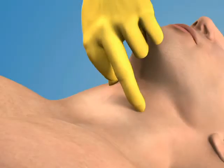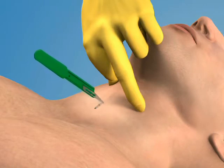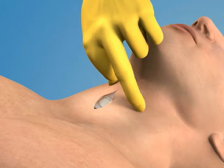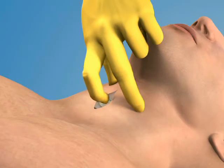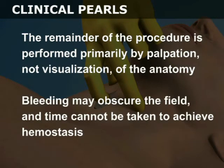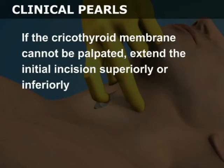Use the 11-blade scalpel to make a 2-3 cm vertical incision through the skin and subcutaneous tissue overlying the cricothyroid membrane. Use the index finger of your non-dominant hand to palpate the membrane through the incision. The remainder of the procedure is performed primarily by palpation, not visualization of the anatomy. Bleeding may obscure the field, and time cannot be taken to achieve hemostasis. If the cricothyroid membrane cannot be palpated, extend the initial incision superiorly or inferiorly.